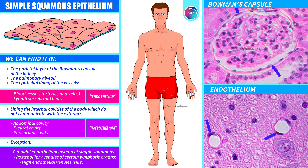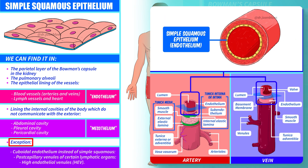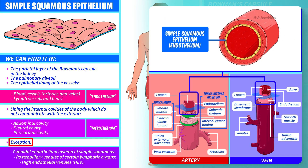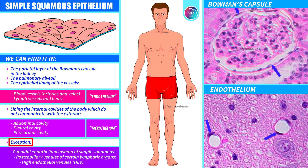We have an exception. We established that the inside of vessels is coated with simple squamous epithelium called endothelium, but there are some vessels, particularly venous vessels, where the cells are not flat. This exception is in the post-capillary venules of certain lymphatic organs, where the endothelium is cuboidal. Let's explain it with drawings so that we don't forget it.